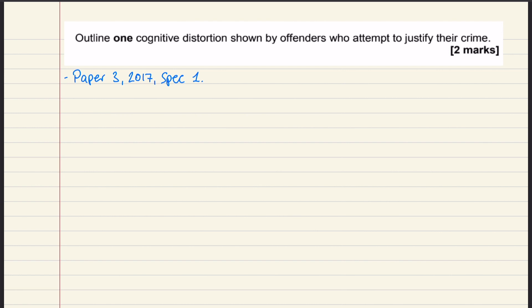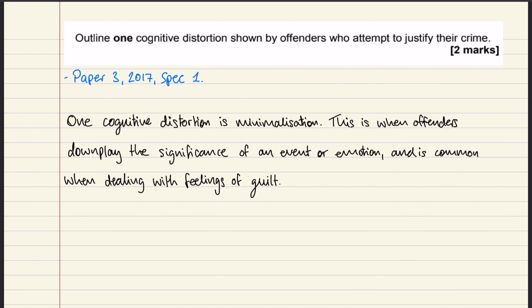Go ahead and pause the video if you want to have a go yourself. So, here is my answer. Obviously you could have used the hostile attribution bias if you wanted to, but I just went ahead and went for minimalisation. I've kept it nice and brief — I've said what minimalisation is and I've given a little bit of extra detail in terms of it reduces guilt. But I don't need much more than that. It is only 2 marks after all.